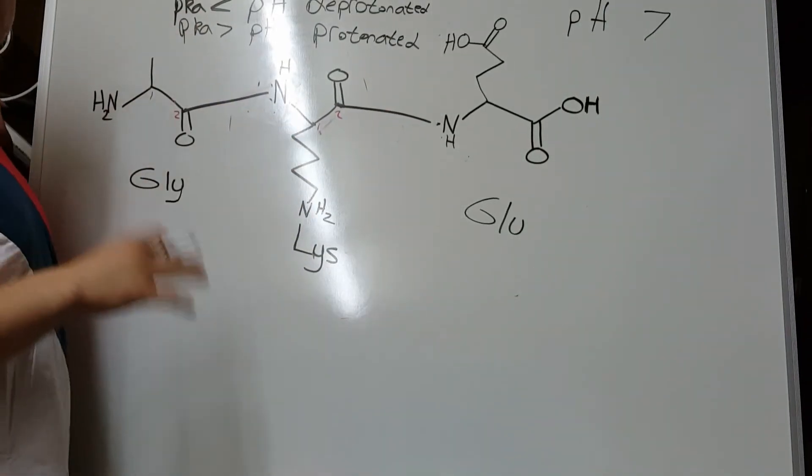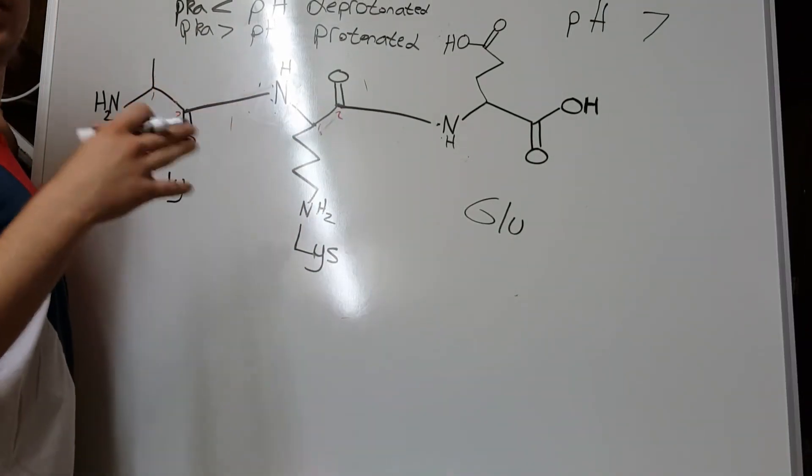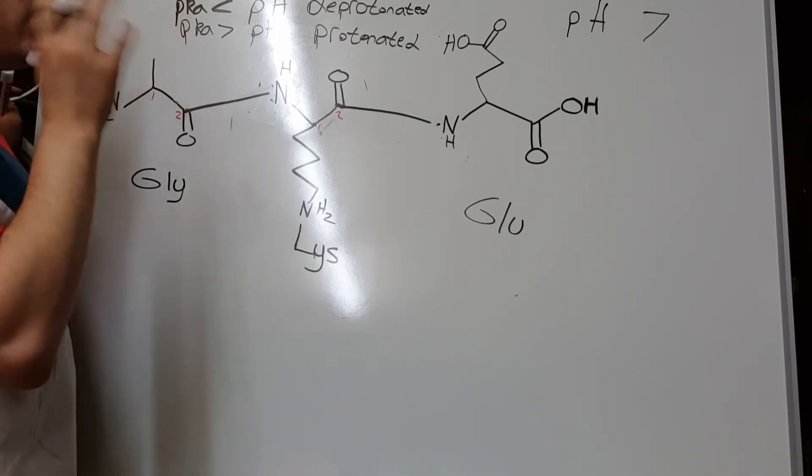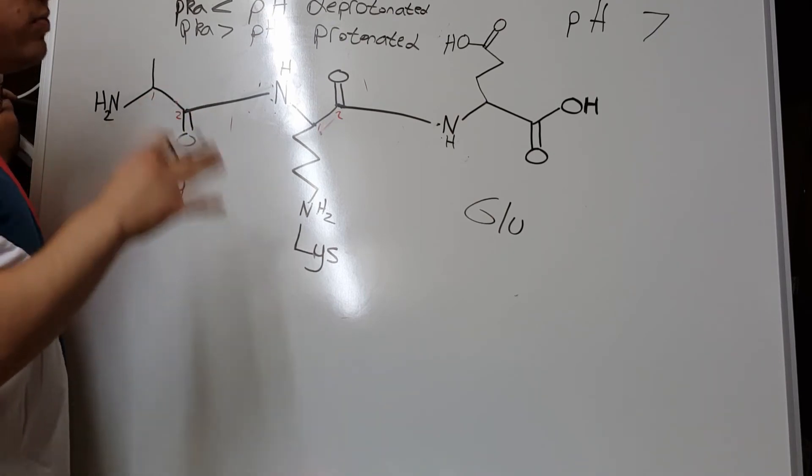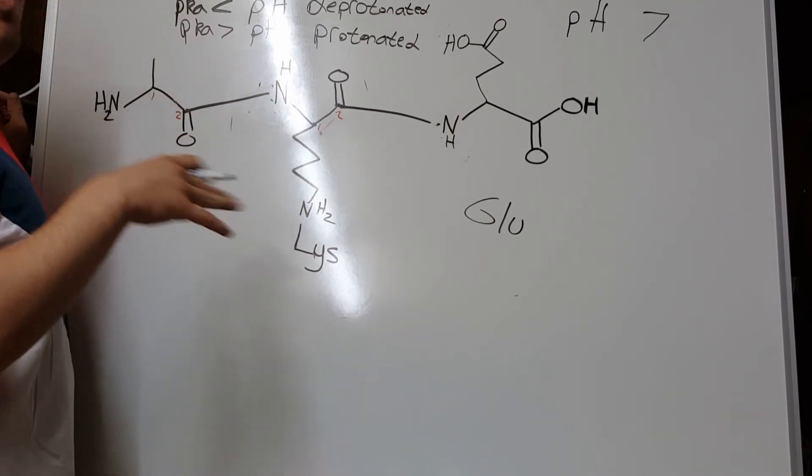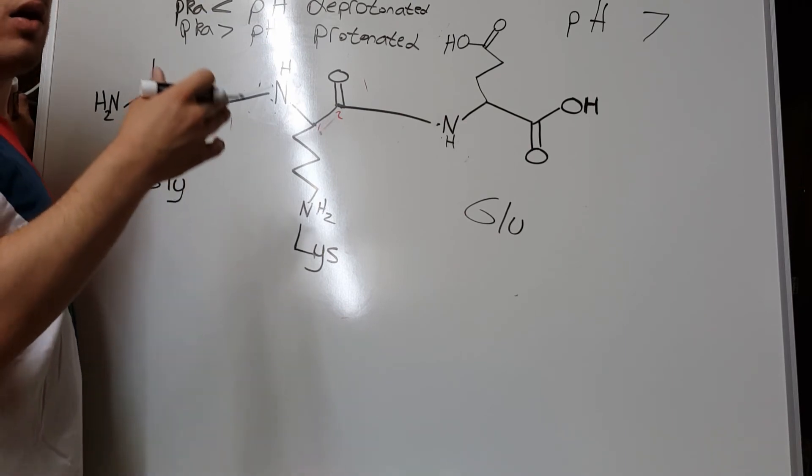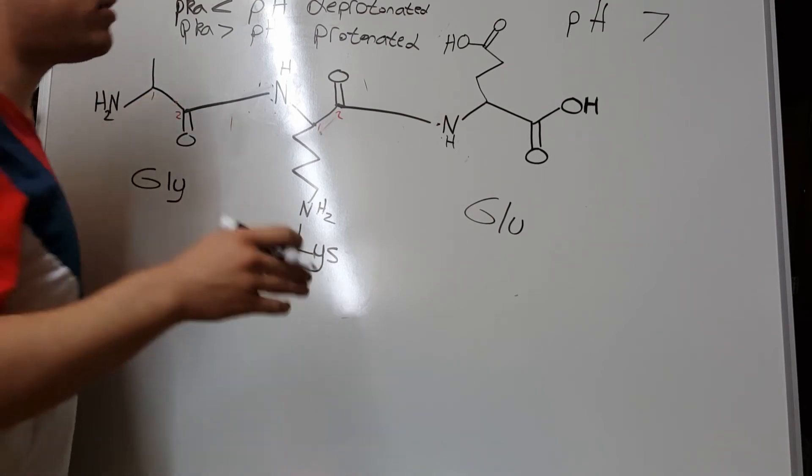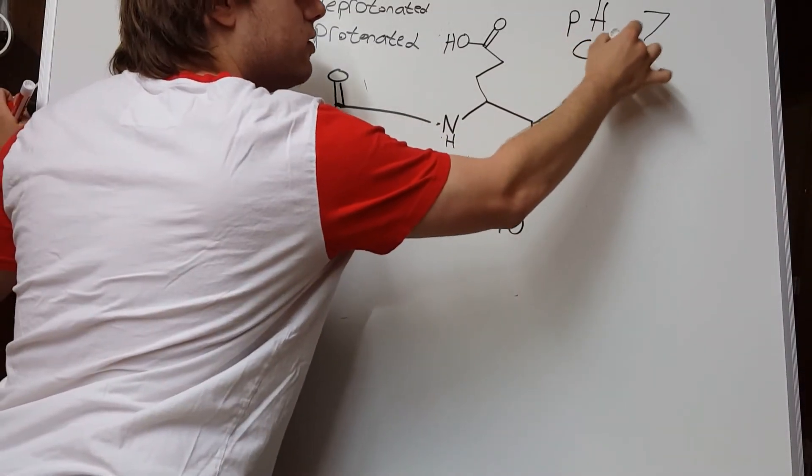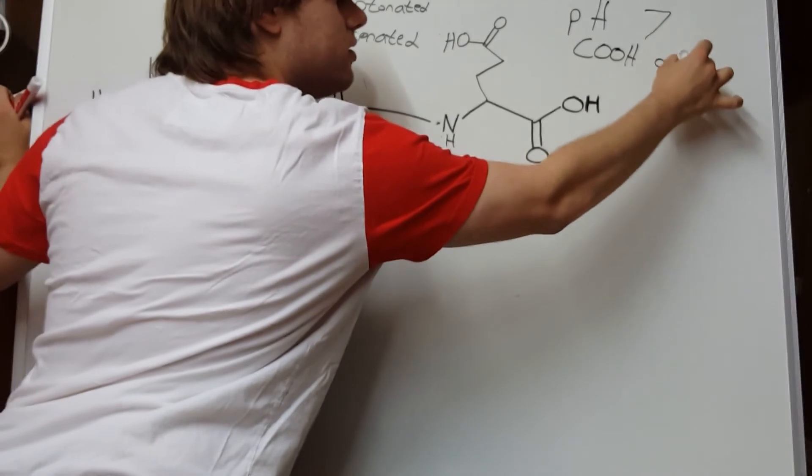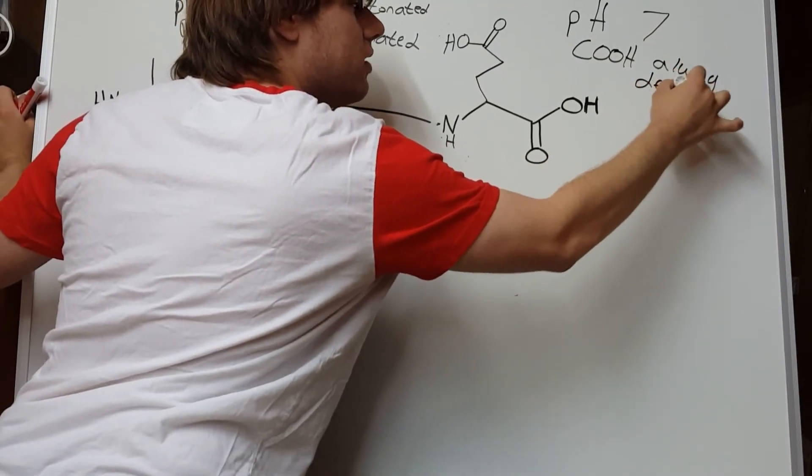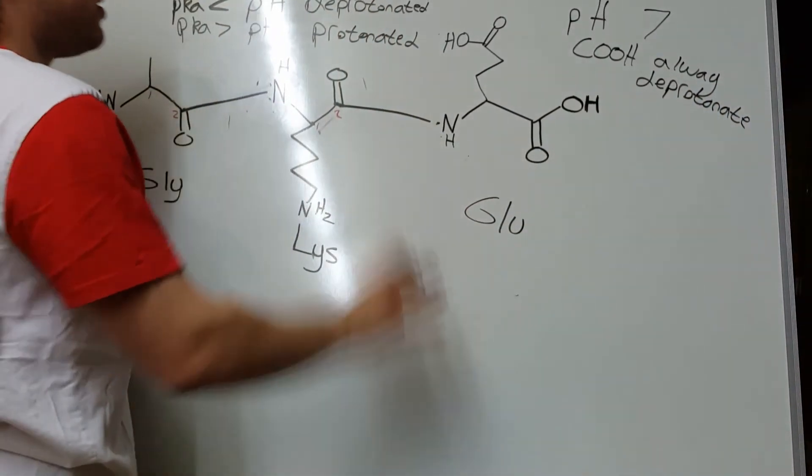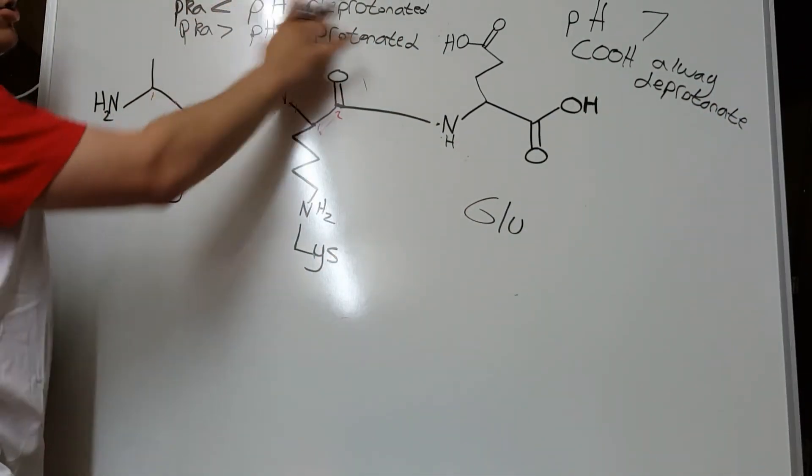Now, I mentioned in the previous video about pKa versus pH that they'll typically give you pKa's if they're necessary to solve a problem. For this question, I don't have to give you any pKa's because I've given you a pH of 7. Because at a pH of 7, there are some rules that every amino acid follows. Namely, in a pH of 7, the carboxylic acid group is always deprotonated. And that's mostly because every carboxylic acid group has a pKa of around 2. Which makes sense then because if a pKa is less than the pH, it should be deprotonated.